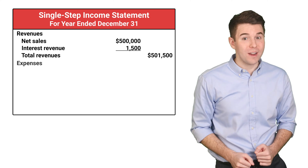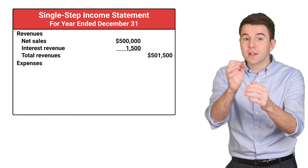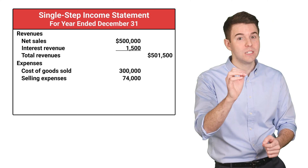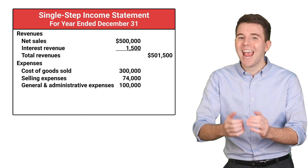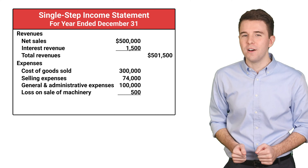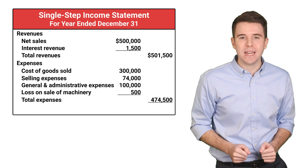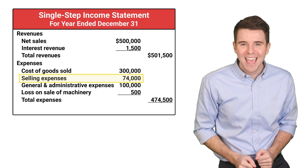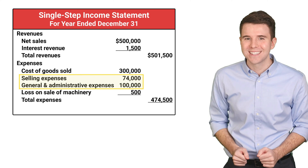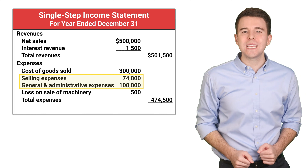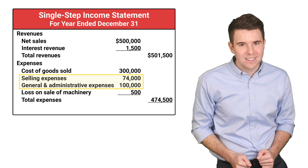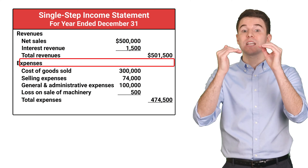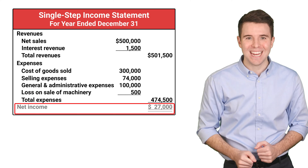Next, let's report expenses. We report cost of goods sold, selling expenses, general and administrative expenses, and loss from the sale of machinery. The single-step income statement does not report the details of selling expenses and general and administrative expenses. Instead, they are grouped together and included under expenses. Finally, we take total revenues and subtract total expenses to get net income.